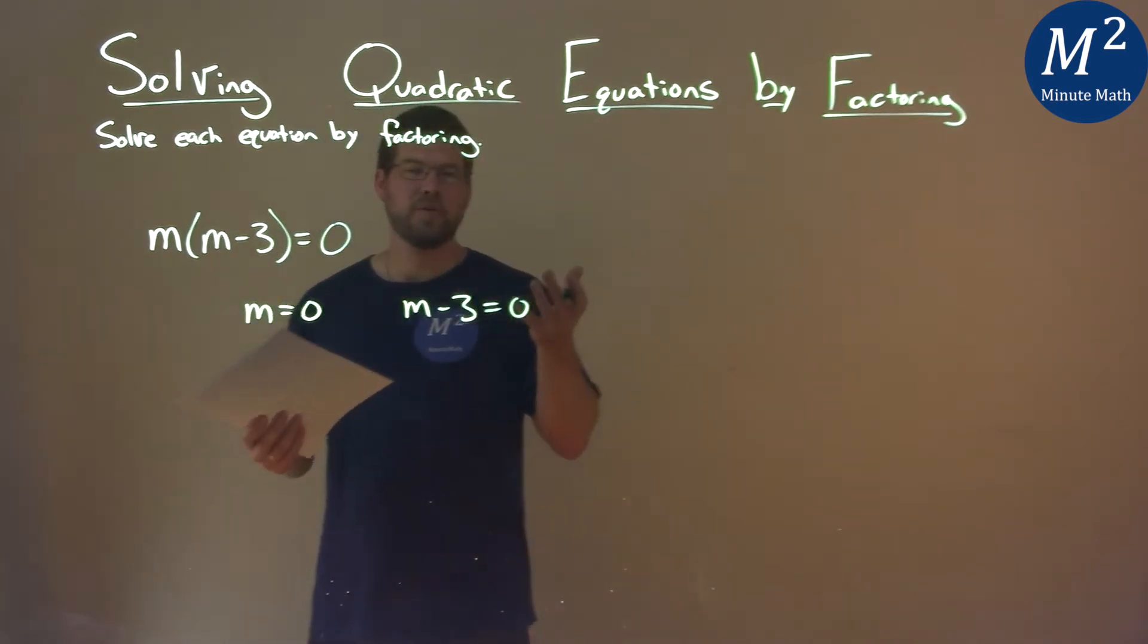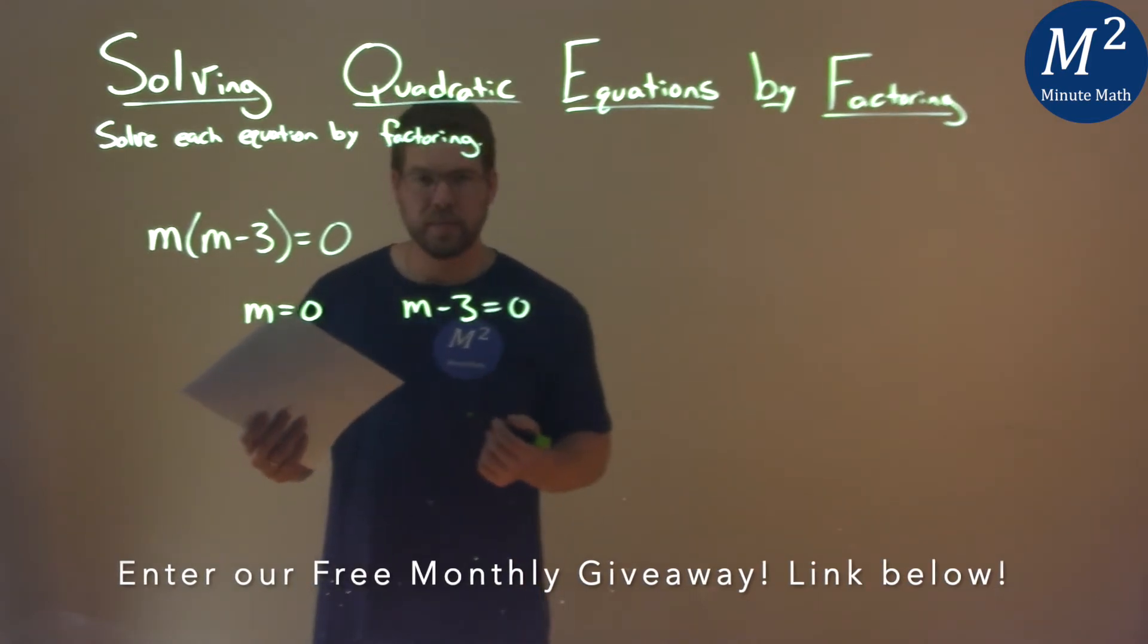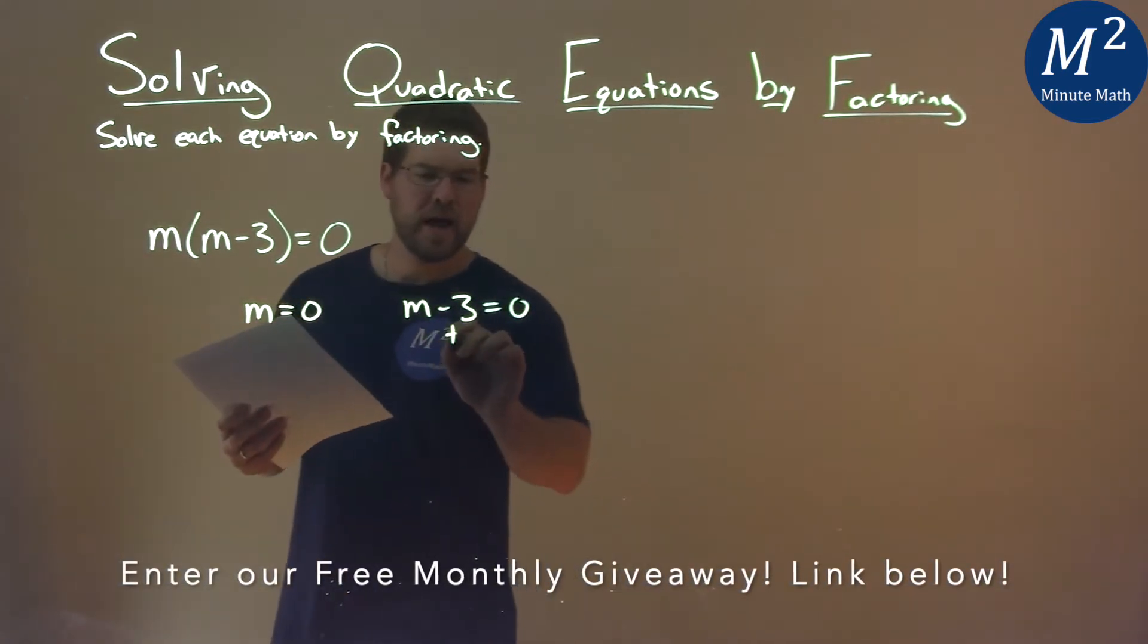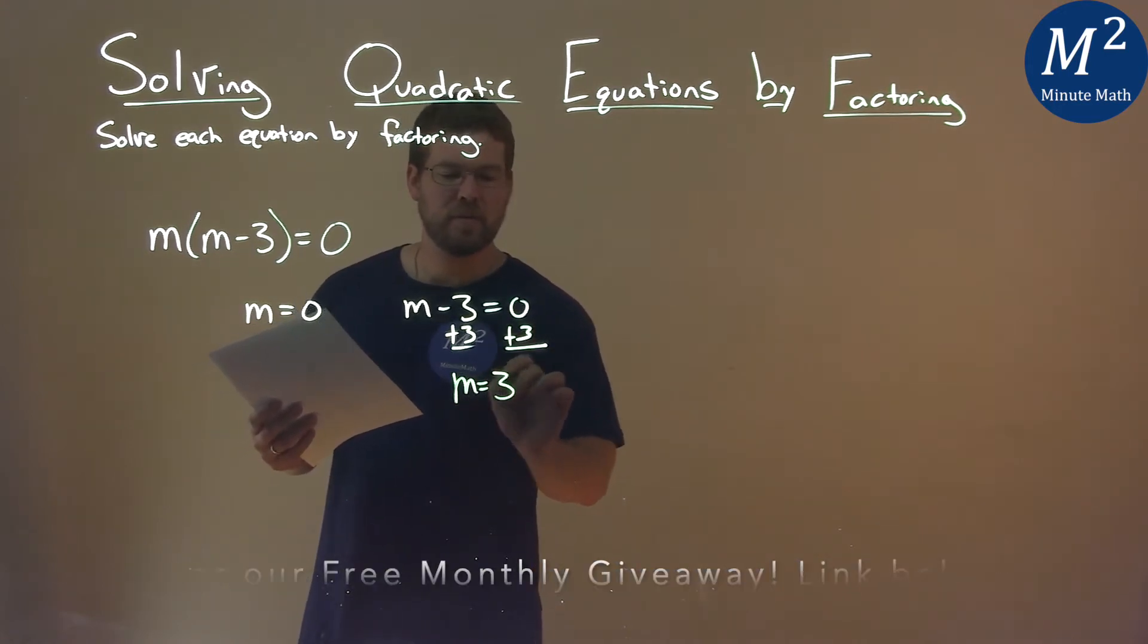Now we solve each one of these for m. Well, the first one's already done for us, m equals 0. The second one, we add a 3 to both sides, and we have m equals a positive 3.